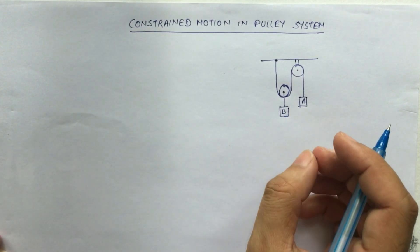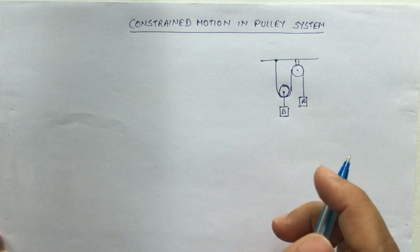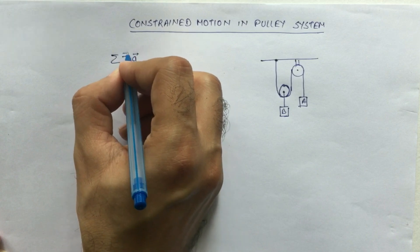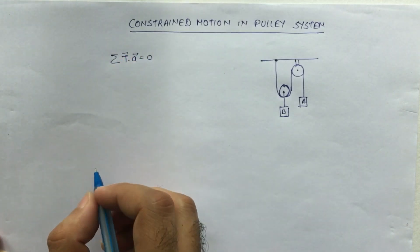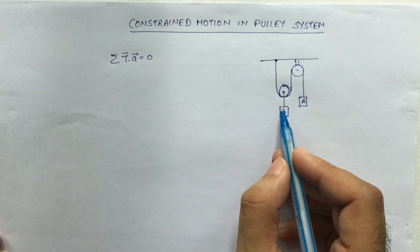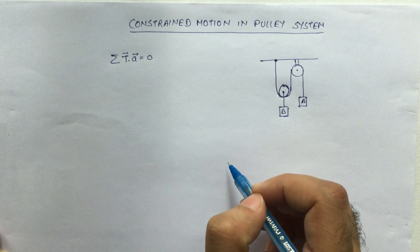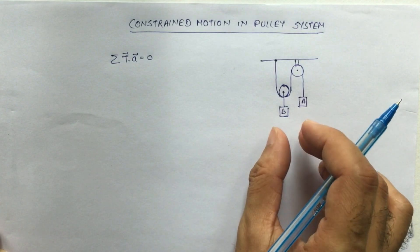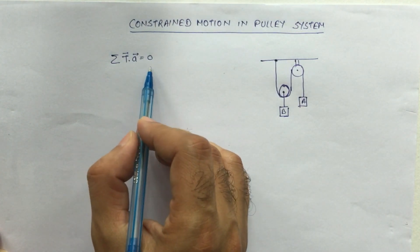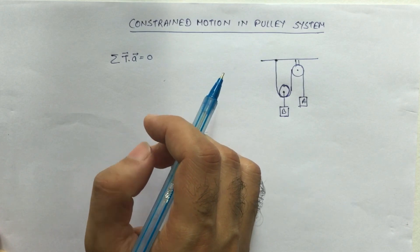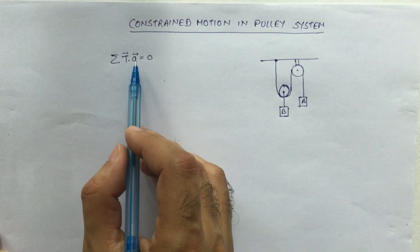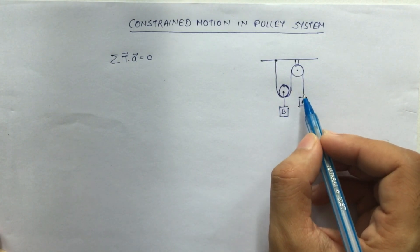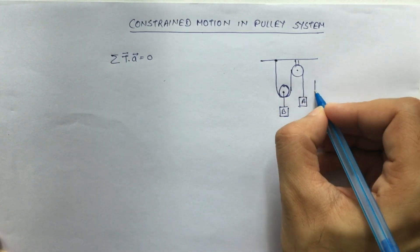In this case, we will use one small fundamental which says summation of T dot a is equal to zero, where T is the tension in the string and a is the acceleration. First I will show you how to solve this problem using this fundamental, and then I will explain where this T dot a equals zero comes from.